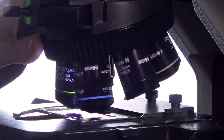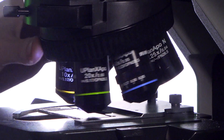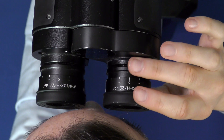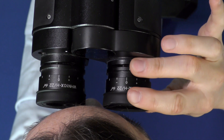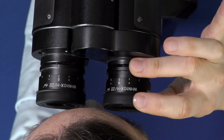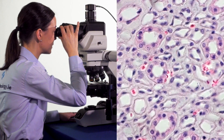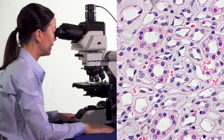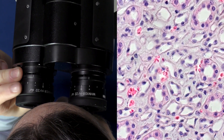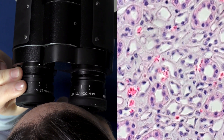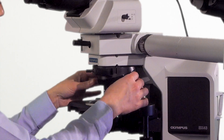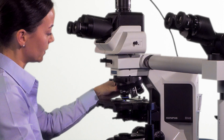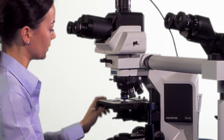Go down to your low-powered objective, something like your 10x objective. Using your right eye, focus your eyepieces using the diopter adjustment until your image is in focus. Repeat this step again for your left eye by turning the diopter of the eyepieces. When you go from low to high power, your image should remain in focus.